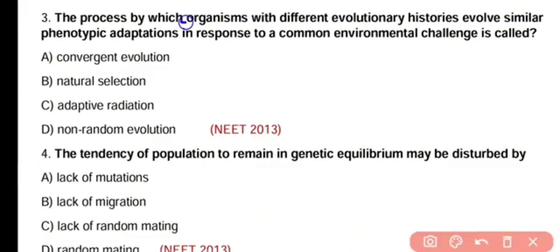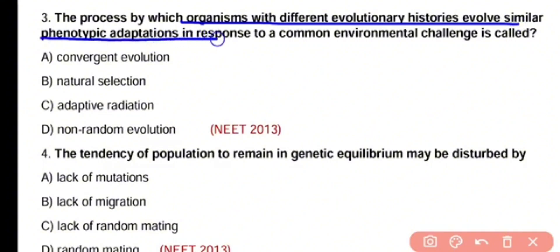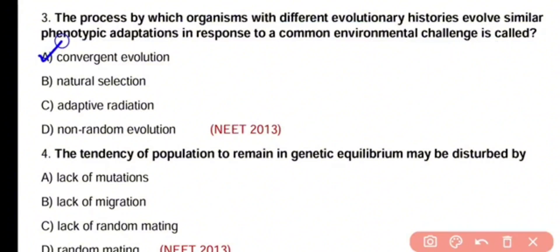Question number 3. The process by which organisms with different evolutionary histories evolve similar phenotypic adaptation in response to a common environmental challenge is called convergent evolution, natural selection, adaptive radiation, or non-random evolution. The correct answer is option A. Organisms which show different evolutionary history but show similar phenotypic adaptation exhibit convergent evolution.